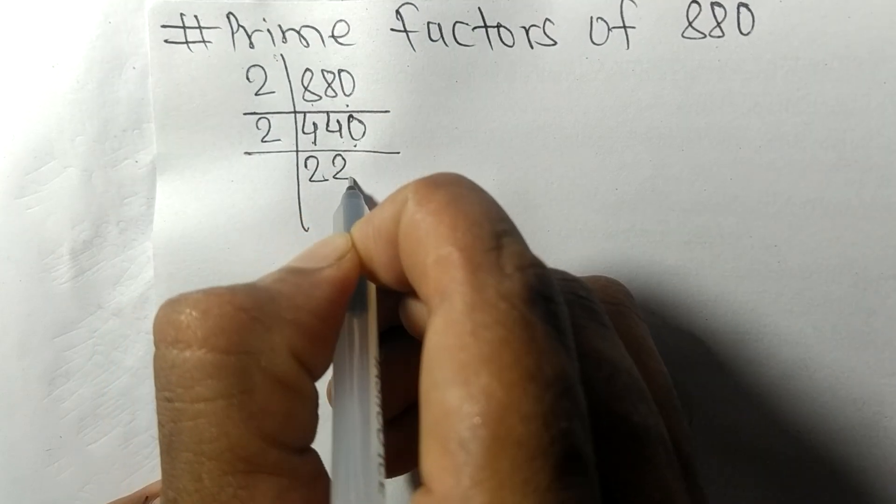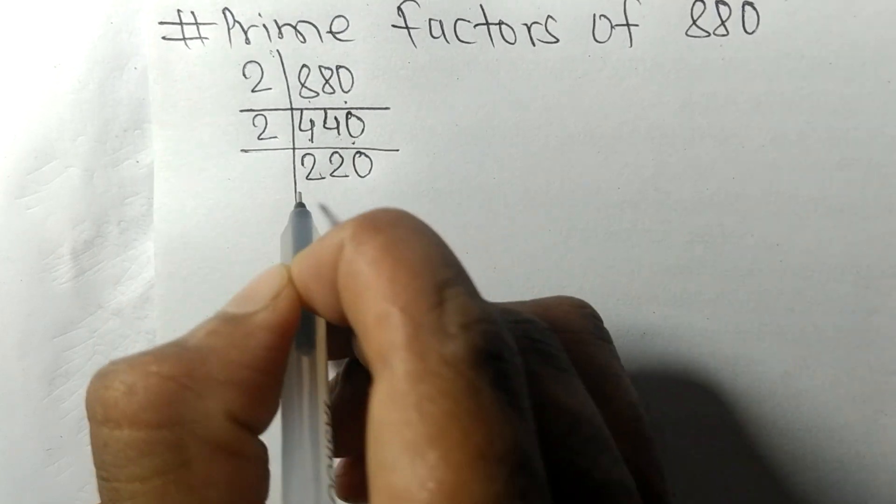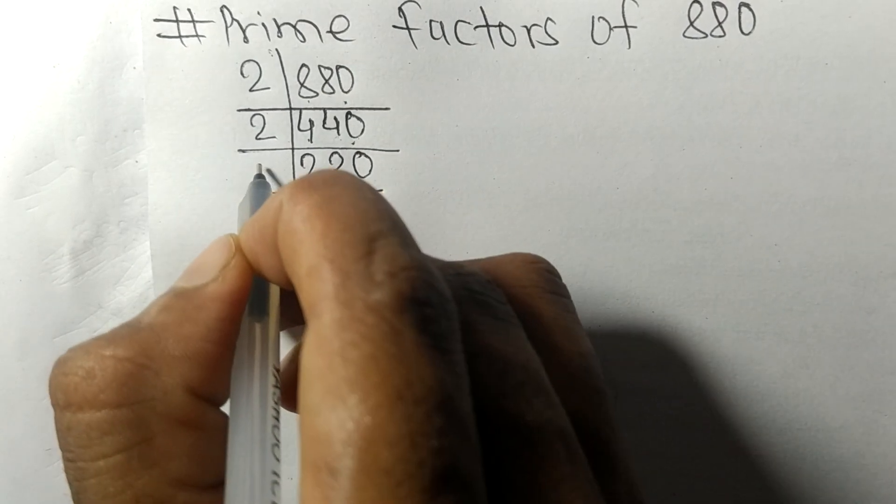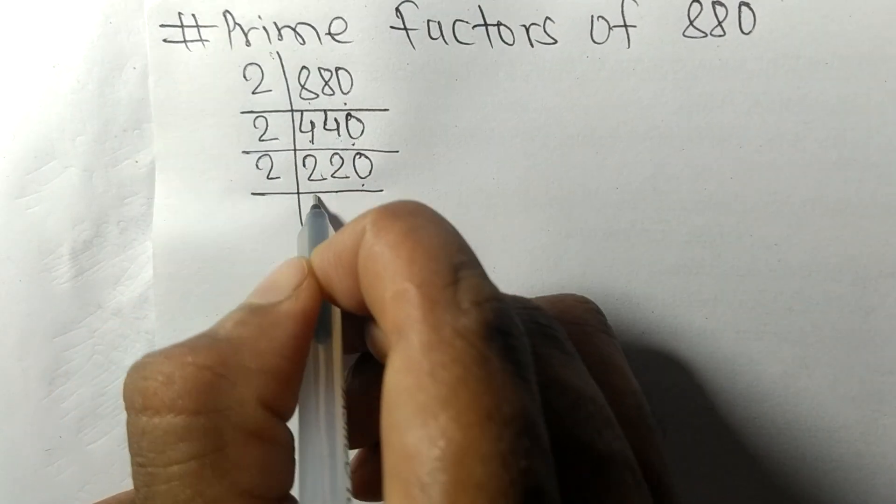Again 0 at the end, so divisible by 2. 2 times 1 is 2, 2 times 1 is 2, 2 times 0 is 0. We get 110.